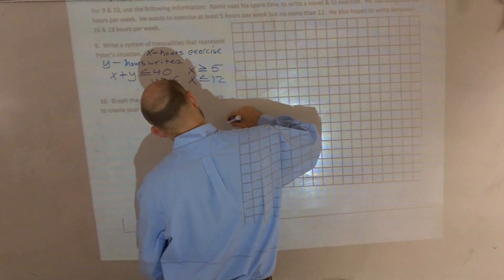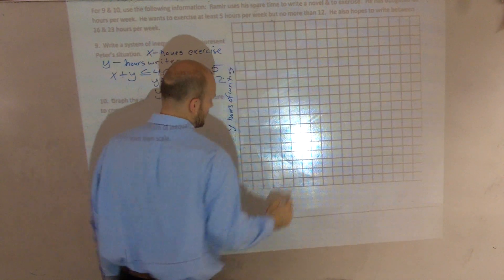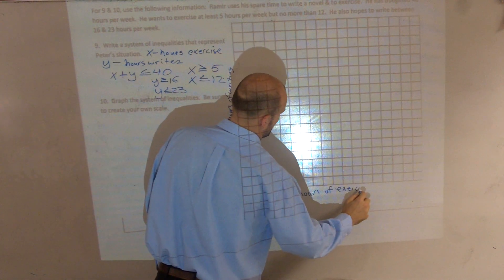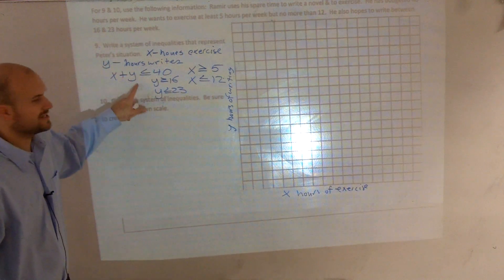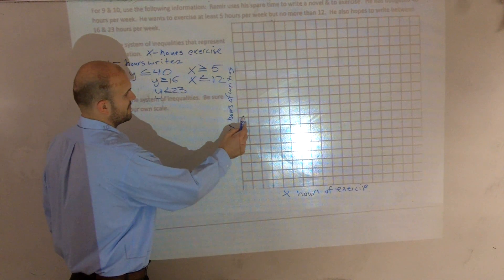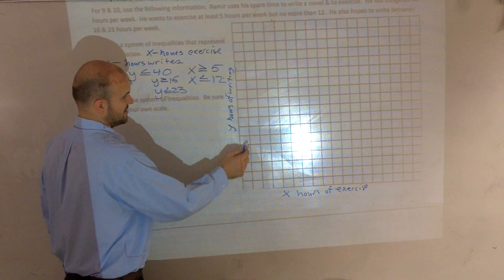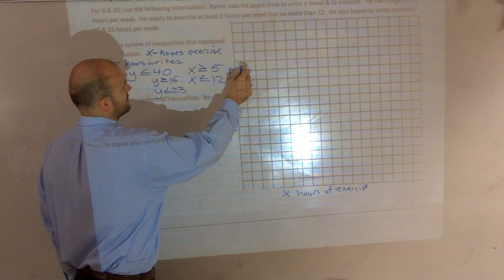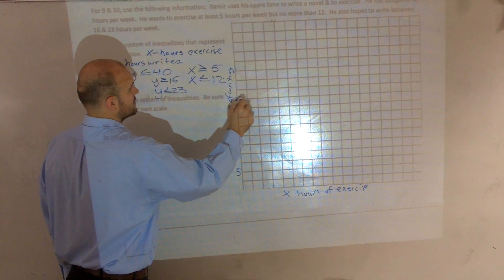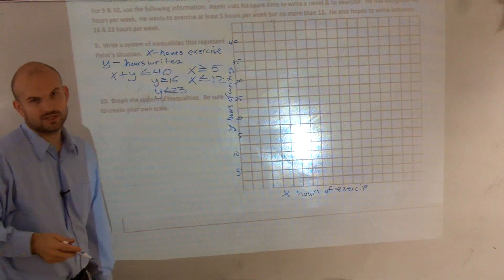I'll change it — hours of writing on the y-axis. Let's go ahead and solve the first one. This is going to go up to 40, so I could go by 5s: 5, 10, 15, 20, 25, 30, 35, 40 on both axes. So let's go by 5s here on the scale, and I'll go by increments of 2.5 within that.